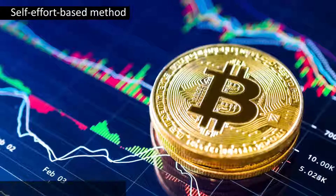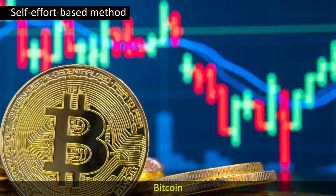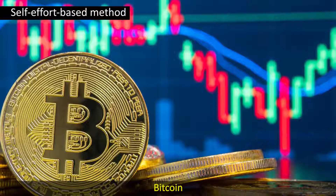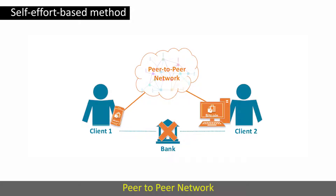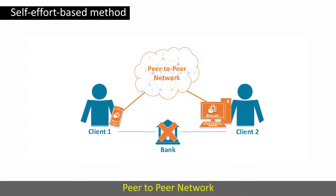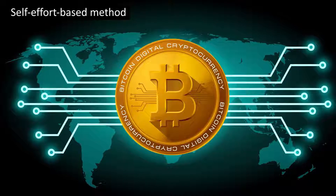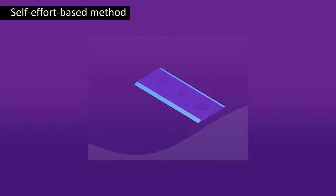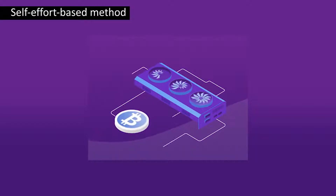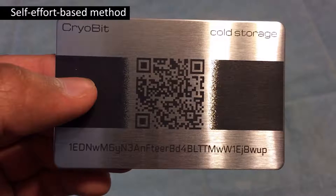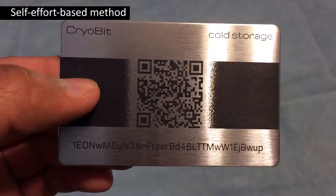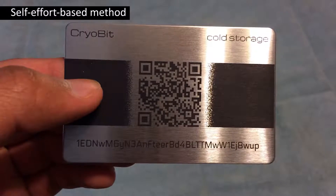Decentralized virtual currency platforms, such as Bitcoin, make use of the self-effort based method to generate peer-to-peer network virtual currency. Bitcoins are usually generated in peer networks and are fixed, immutable, and have only a finite generation of virtual coins, making them different from centralized platforms. Computer systems use special software to produce virtual currencies by solving complex mathematical puzzles, distributed to network users in a random manner. These virtual coins are fully controlled and managed by users and stored locally in digital wallets.